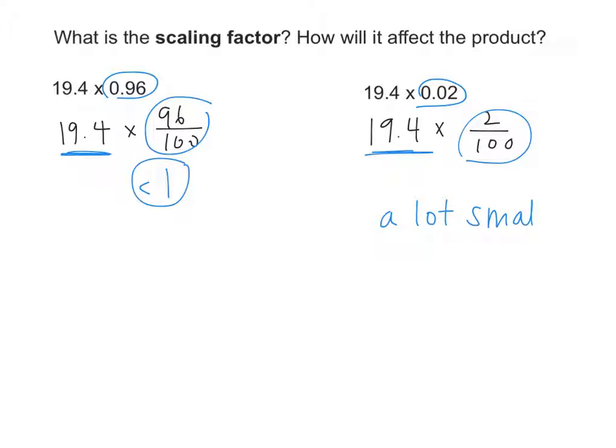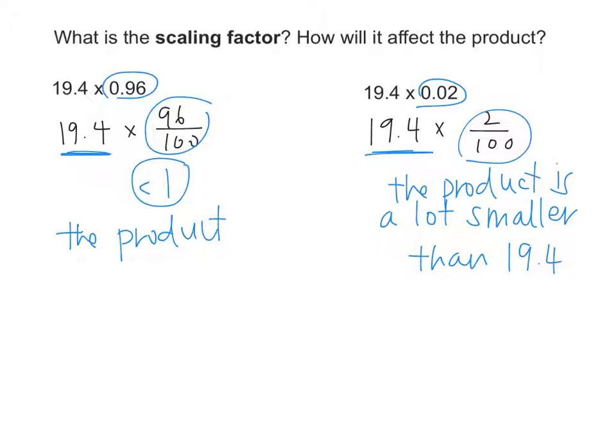So, we can see that this example here is going to be a lot smaller. The product is going to be a lot smaller than 19.4. And when I say a lot, I mean the product is. And over here, the product will only be a little bit smaller, right? Do you guys see that? And I love the way people are taking good math notes by writing these down.